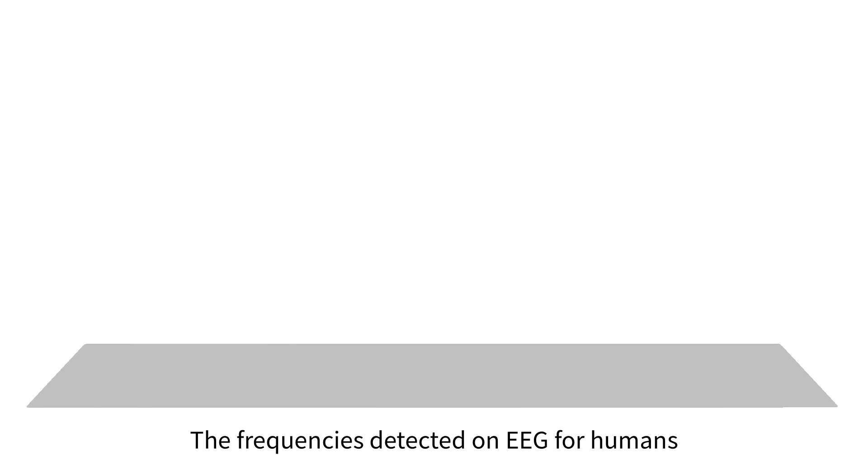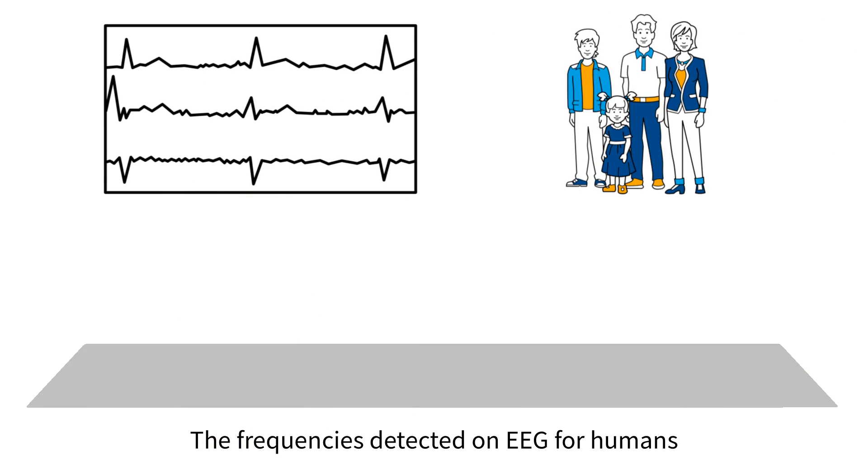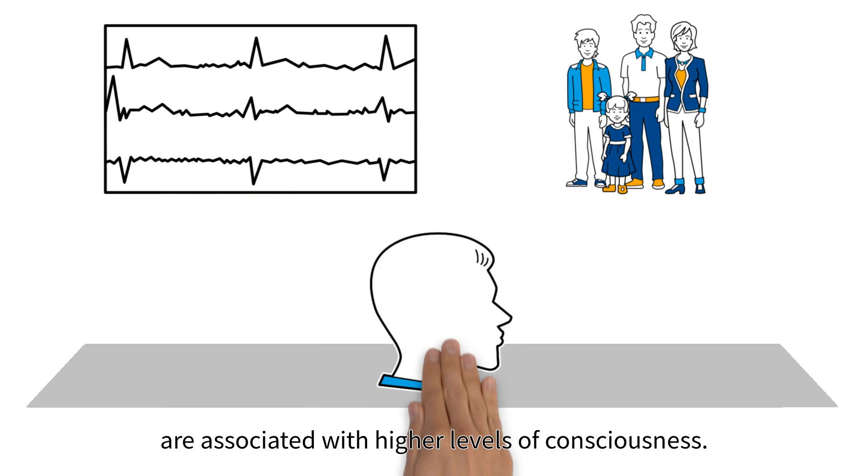The frequencies detected on EEG for humans can exceed 40 Hz. Higher frequencies are associated with higher levels of consciousness.